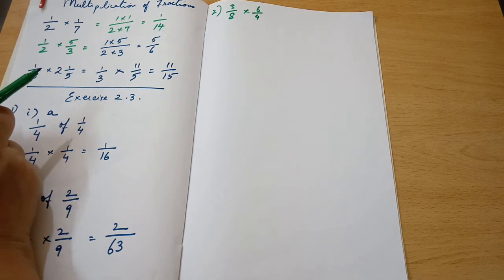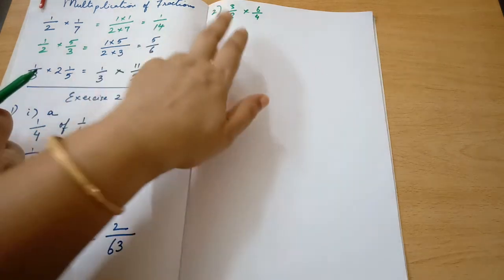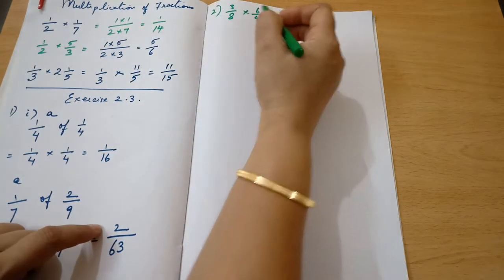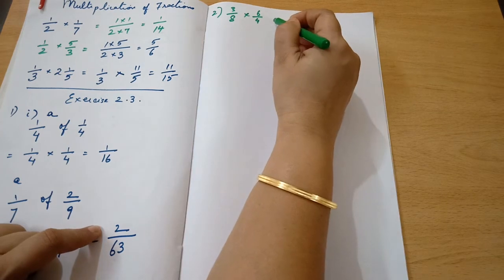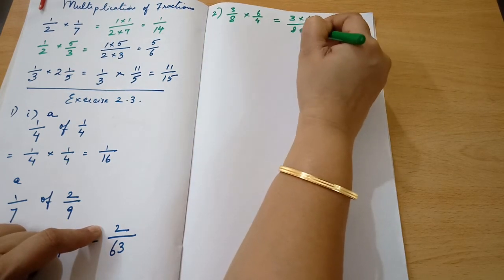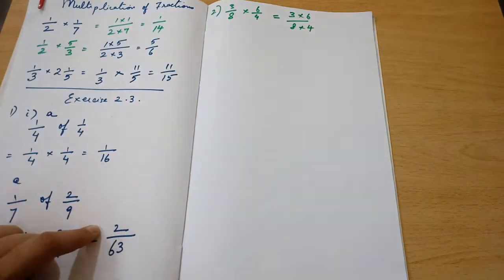In most of the cases you will see that it is not possible, but in this particular case you can follow the instructions and multiply straight away, which is 3 into 6 by 8 into 4, and write the answer.